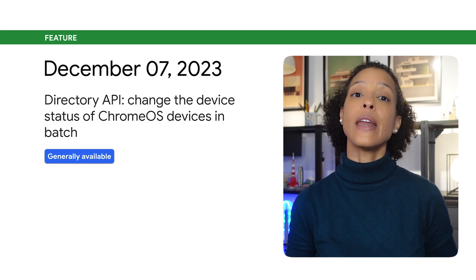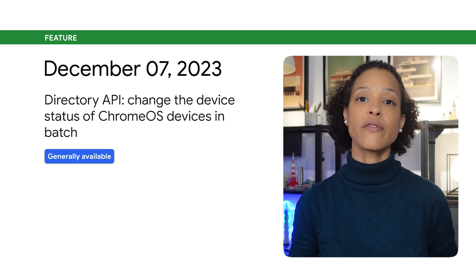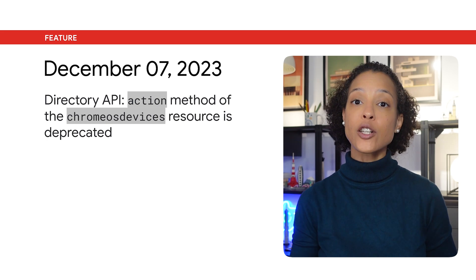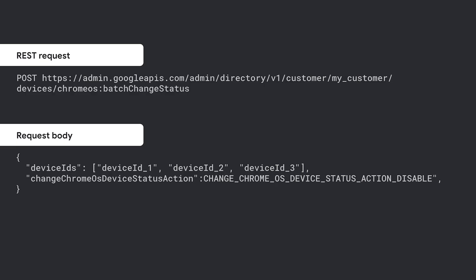The Directory API now allows you to change the device status of Chrome OS devices in batch. The action method of the Chrome OS devices resource is deprecated. Instead, use the batch change status method in the customer.devices.chromeOS resource. On screen, you see an example of how you can use the batch change status method to disable Chrome devices.